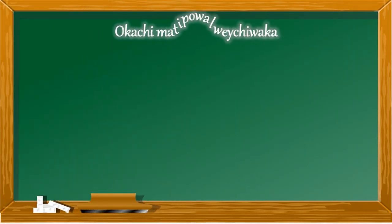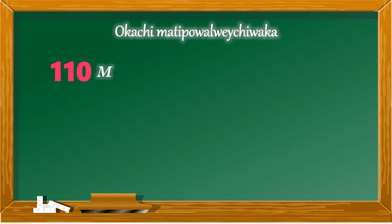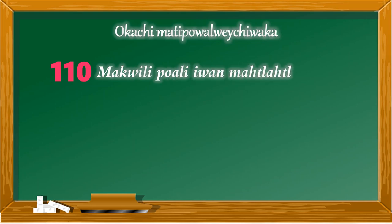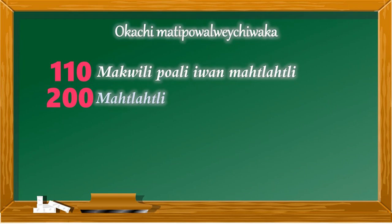Formemos cantidades más grandes. El 110 sería macuilipoali iwamachiknawi, lo que equivale a 5 de 20 y 10. El 200 sería matlaklipoali, es decir 10 de 20.